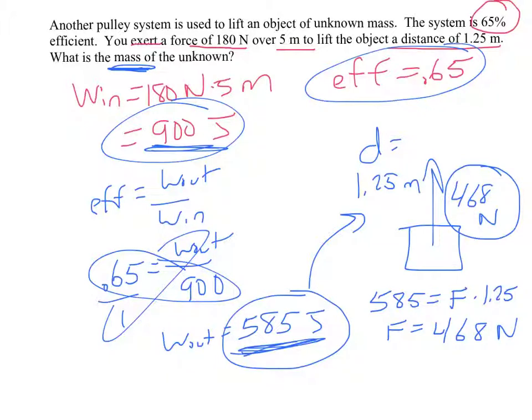And this goes back to converting from weight to mass and vice versa. Remember weight, force of the weight is mass times g. So in order to find mass, you're just dividing each side by g or by 10. So the mass is 46.8 kilograms. And that's our final answer.